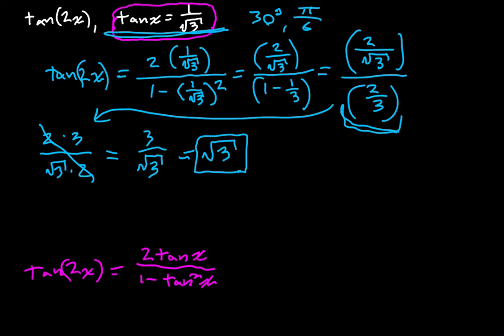What's twice that angle? Well, 2x, right? 2x is going to be equal to 60 degrees, or pi over three radians. Great.